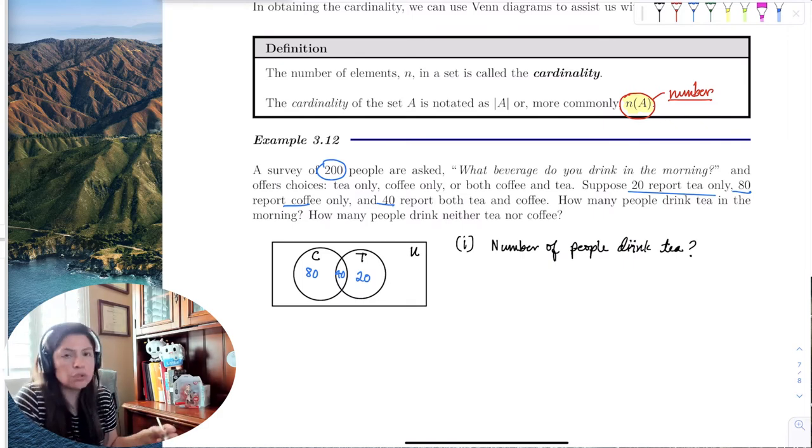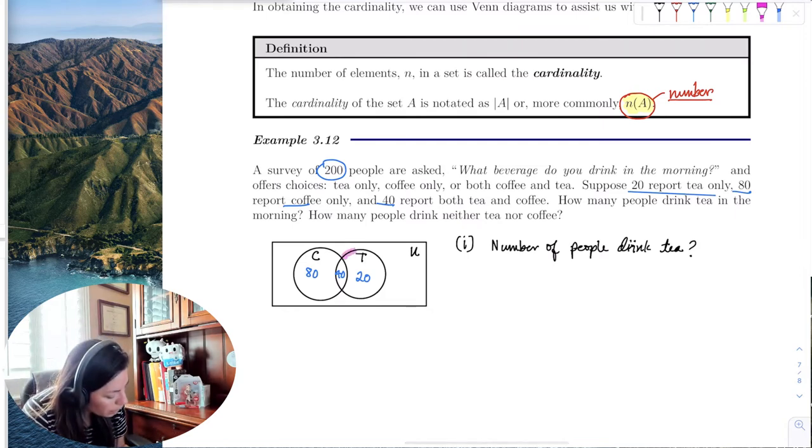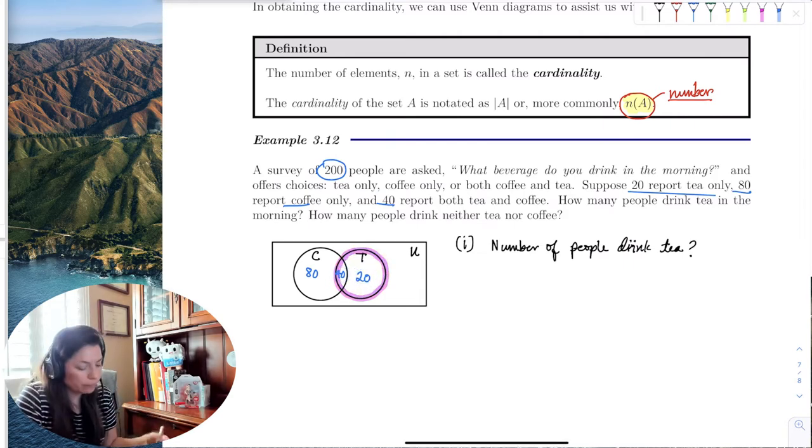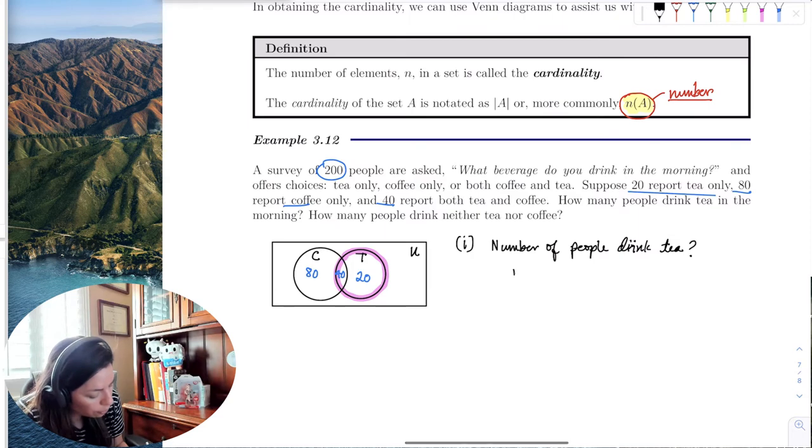So not only do you get the people who only are committed to tea only, but you get the people who drink both. So if you look at the tea circle, I'll circle it. Notice that this intersection here of tea and coffee and tea only are the entire group that drink some sort of tea in the morning. So the number of people that drink tea is going to be the people that drink coffee and tea, because they have tea, plus tea only, which is 60.